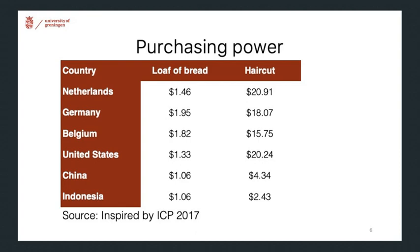What this shows is that a dollar will buy you more bread, but especially more haircuts, in China and Indonesia. And this is a systematic pattern: prices tend to be lower in low-income countries, and especially so for goods that are non-traded. Loaves of bread can be traded, so the scope for price differences through arbitrage is comparatively limited. To get cheap haircuts, you'd have to travel to Jakarta and get your haircut there — so that $2.40 price is not attainable if you're actually living in the Netherlands.